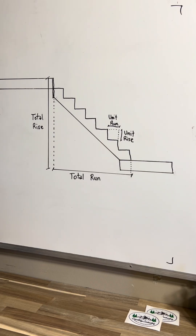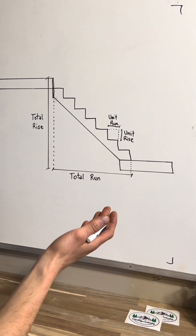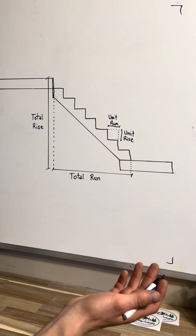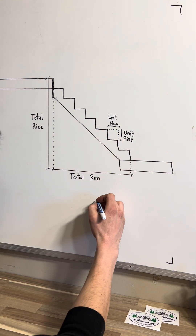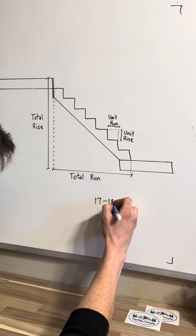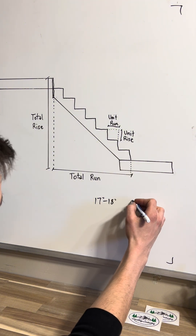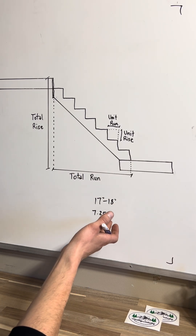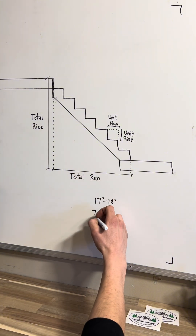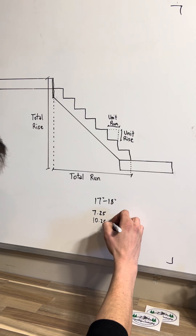Now that we've found our unit rise, we can find our total run. The total run is a lot easier unless you're constrained by how far out you can go — you really just want to make the stairs comfortable. The golden rule I was taught is that your unit rise and unit run, when added together, should land between 17 and 18 inches, and that'll make for a comfortable step. So with a unit rise of 7.25, we're going to want about a 10 to 10.5 inch run — let's say a 10.25 inch unit run.